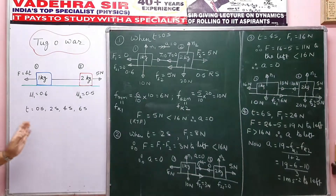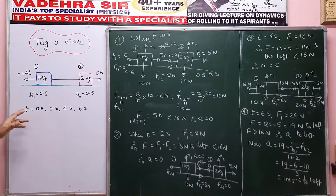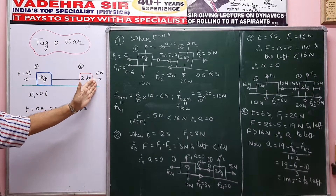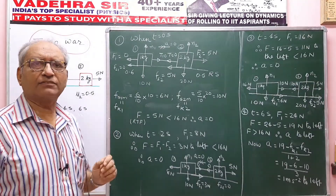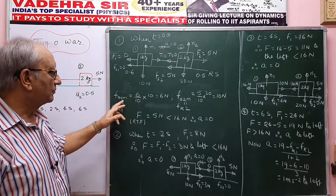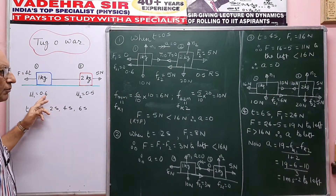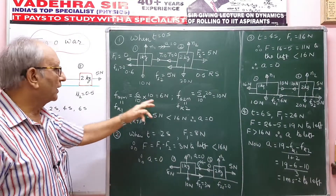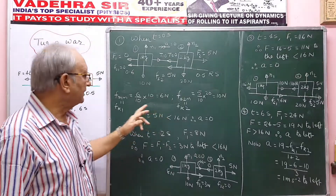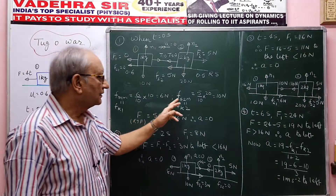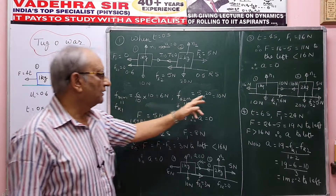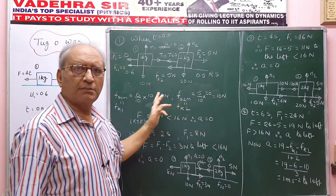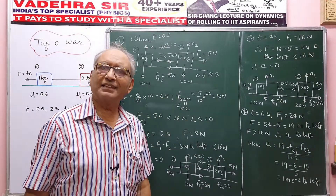First of all, let me calculate the maximum static friction on both blocks. FS1M = 0.6 × N1 = 0.6 × 10 = 6 Newton, and that equals Fk1. Then FS2M = 0.5 × N2 = 0.5 × 20 = 10 Newton. So the total maximum opposing force will become 6 + 10 = 16 Newton.